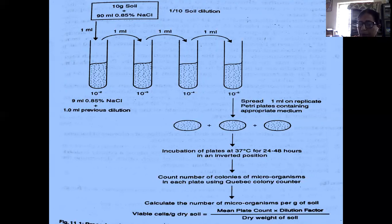The viable cells per gram dry soil is calculated by the formula: mean plate count into the dilution factor divided by the dry weight of the soil.